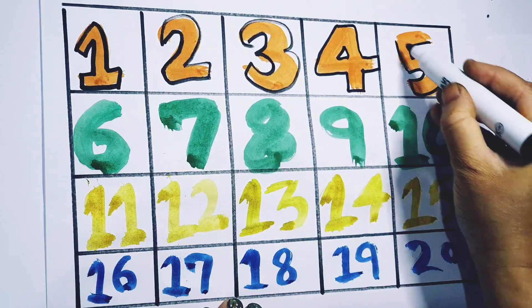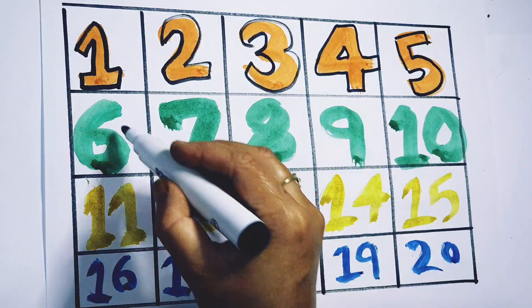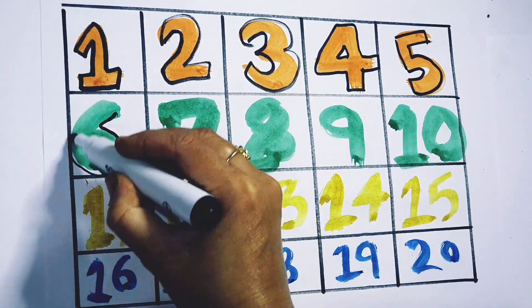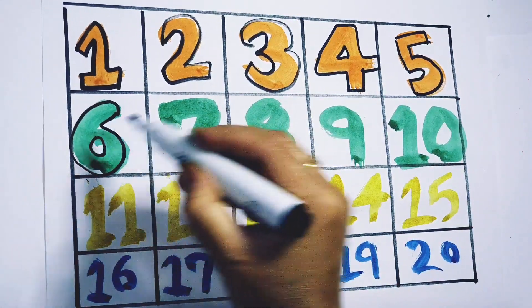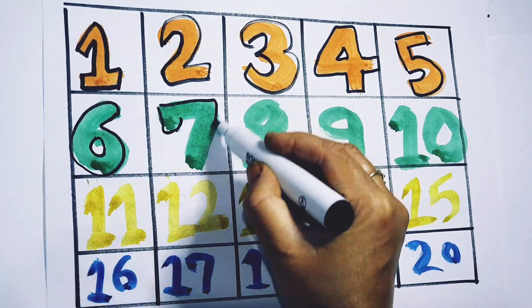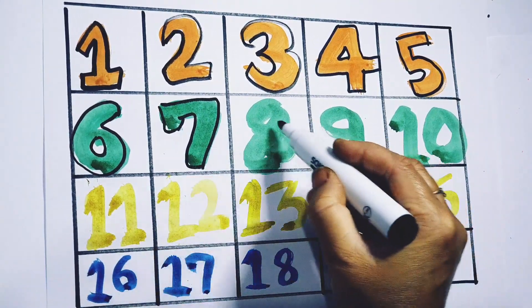5 — F, I, V, E — 5. 6 — S, I, X — 6. 7 — S, E, V, E, N — 7.